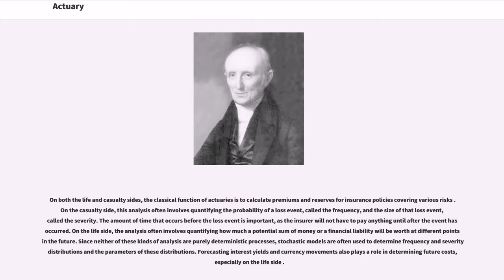On both the life and casualty sides, the classical function of actuaries is to calculate premiums and reserves for insurance policies covering various risks. On the casualty side, this analysis often involves quantifying the probability of a loss event, called the frequency, and the size of that loss event, called the severity. On the life side, the analysis often involves quantifying how much a potential sum of money or a financial liability will be worth at different points in the future.